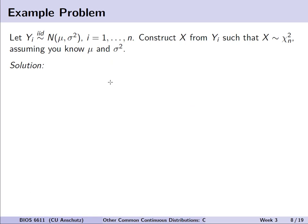Here's an example problem: assume that y sub i represents a random variable from a normal distribution with mean mu and variance sigma squared. Try to construct a new random variable x from y sub 1 up to y sub n such that x is shown to be chi-squared distributed with n degrees of freedom, assuming both mu and sigma squared are known. Pause here to try working through the math before we walk through the solution on the next slide.